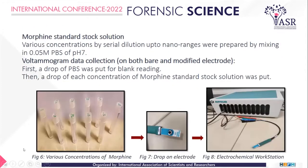To prepare morphine standard stock solution, different concentrations were prepared by using serial dilution method, going up to nanoranges. The different concentrations were diluted using 0.05 molar PBS of pH 7. Voltammogram data was collected both on the bare electrode and on the modified electrode. First, for blank reading, a drop of PBS was put. Then a drop of each concentration prepared by serial dilution was put and the readings were taken. The flow can be seen in these figures.